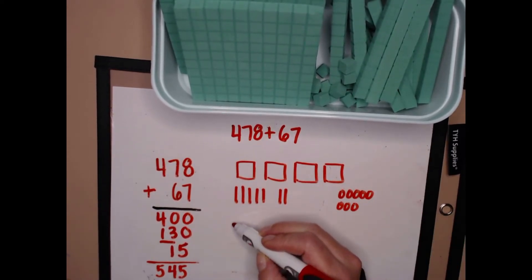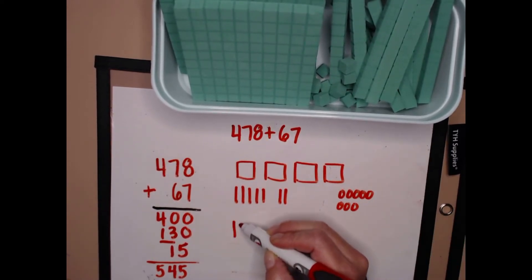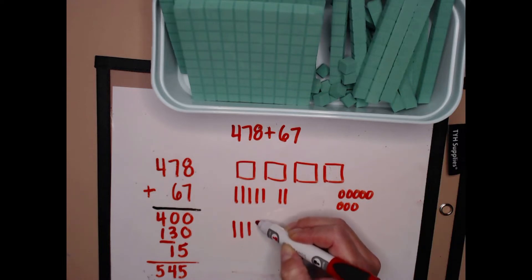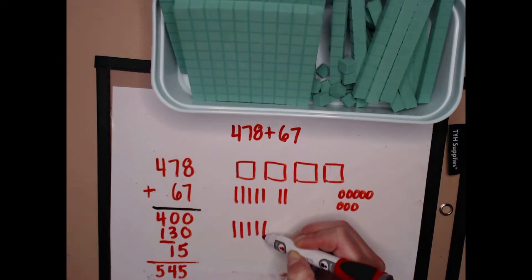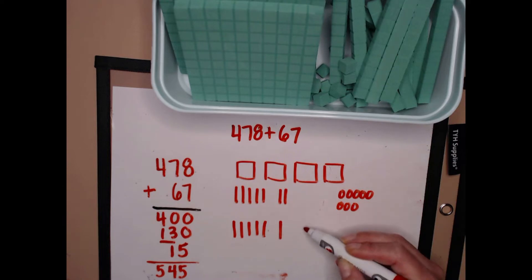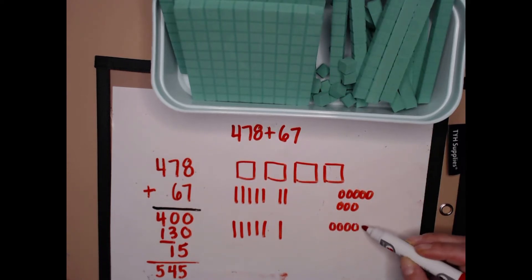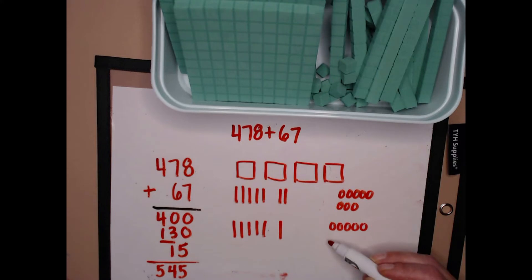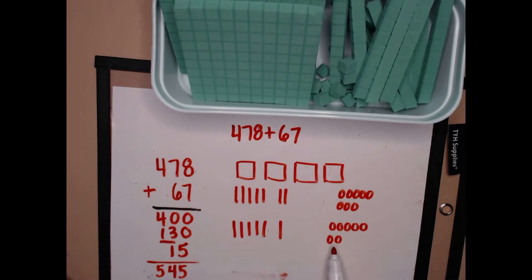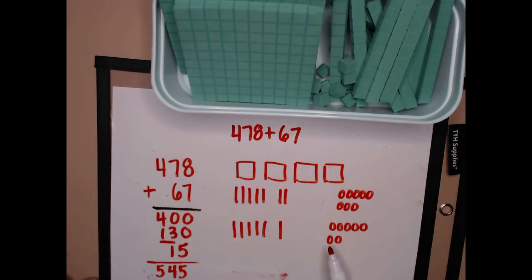Now I have sixty-seven: ten, twenty, thirty, forty, fifty, pause, sixty, sixty-one through sixty-seven. Notice everything is broken into five groups and extras and I try to put everything together in groups. Now I'm going to see if I can make any new groups of ten or any new groups of a hundred.